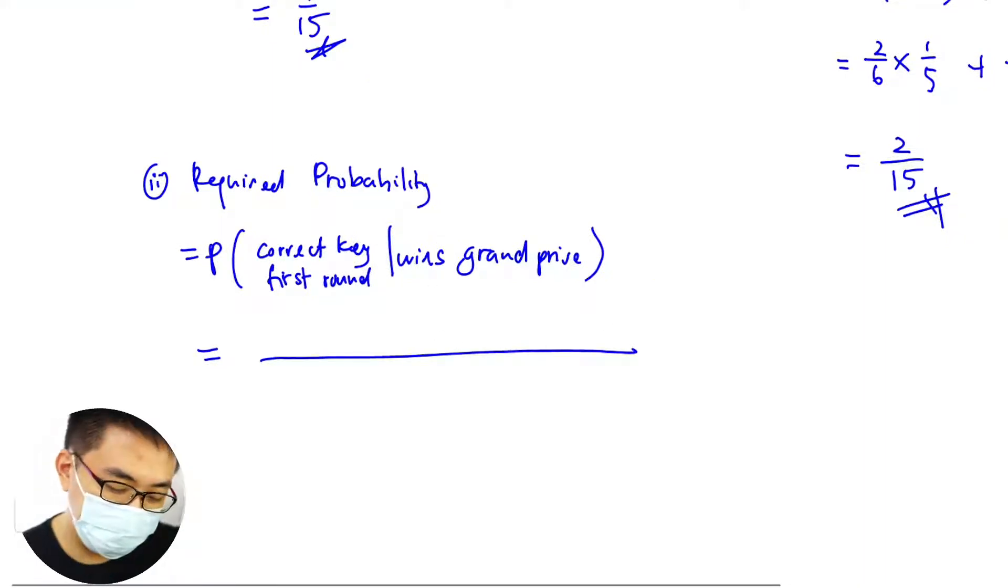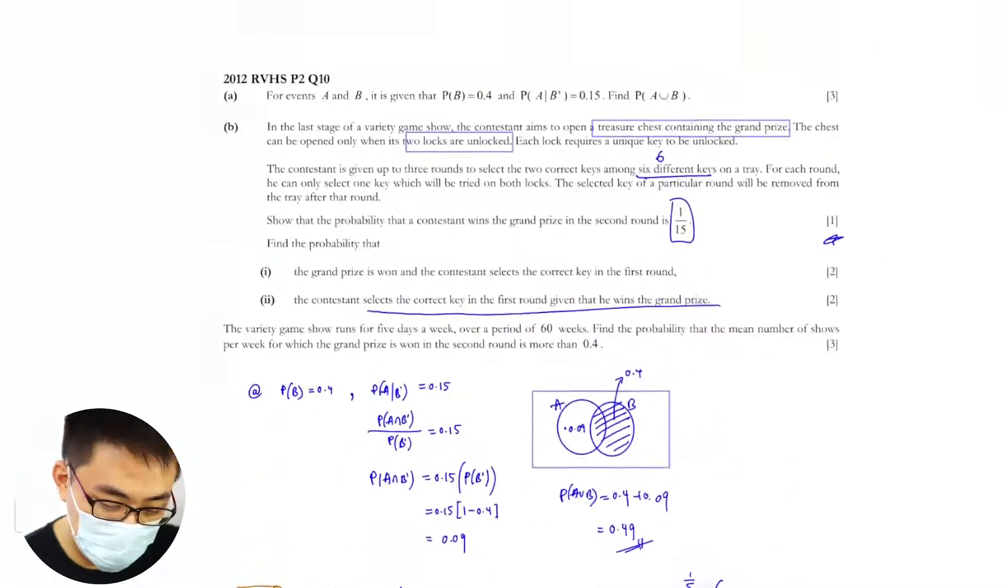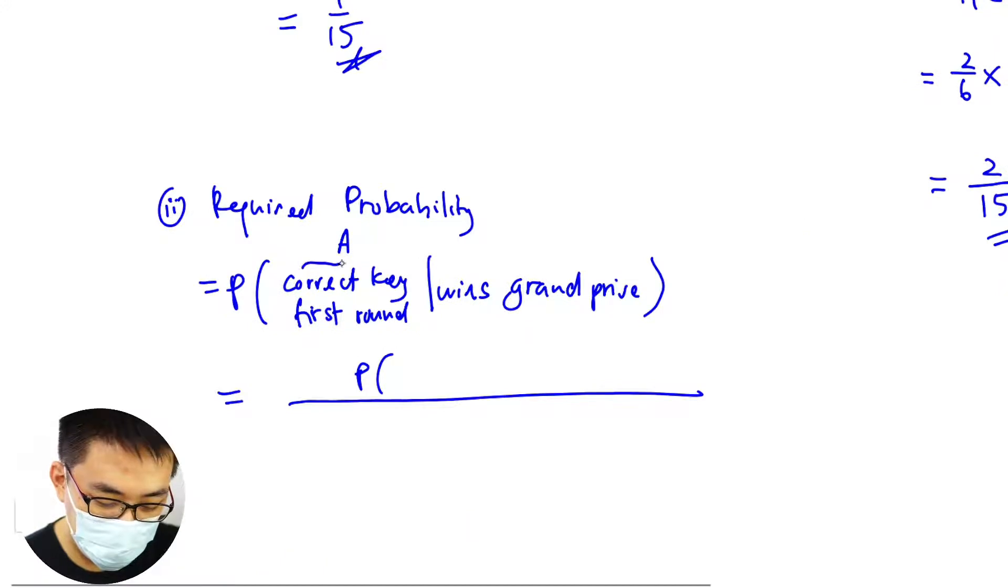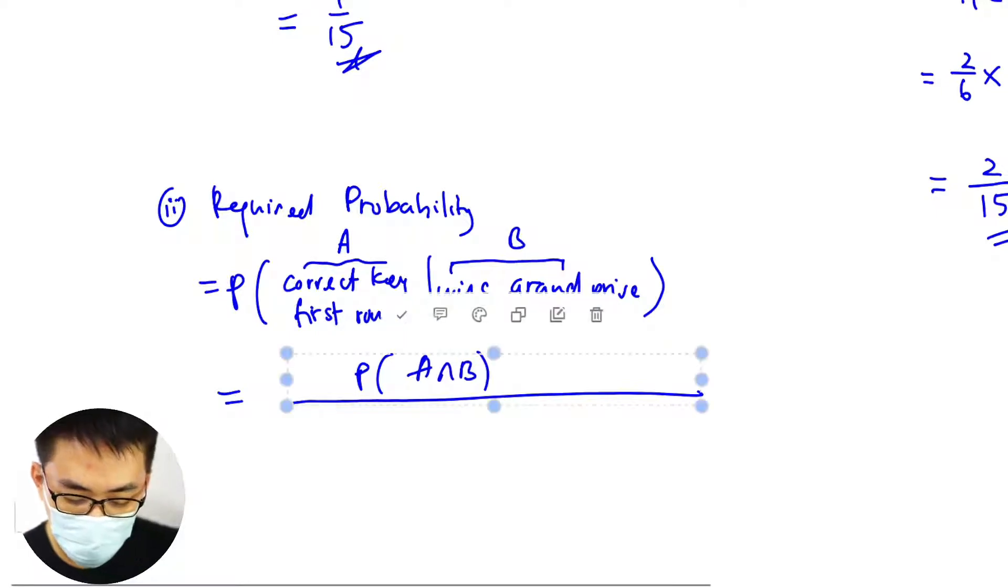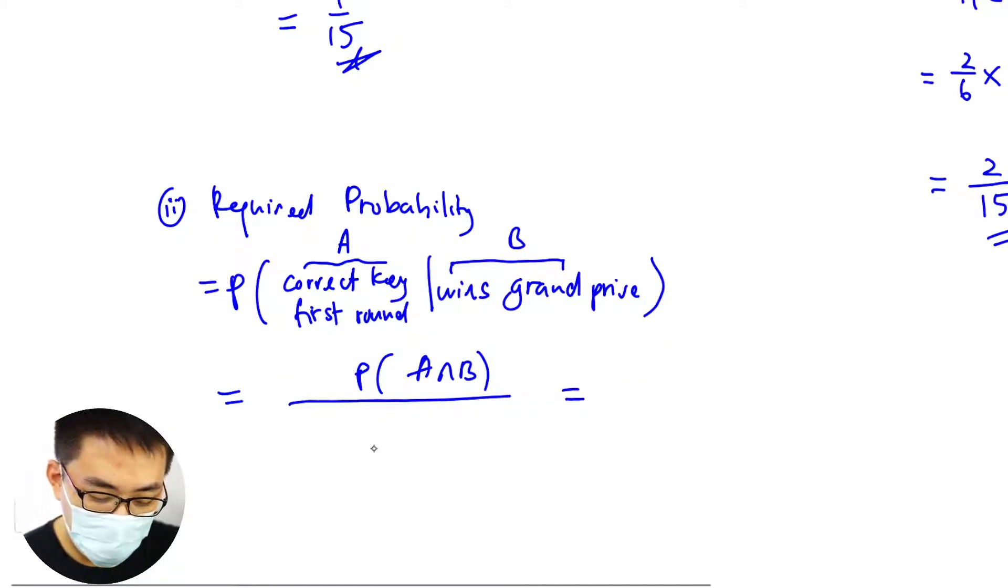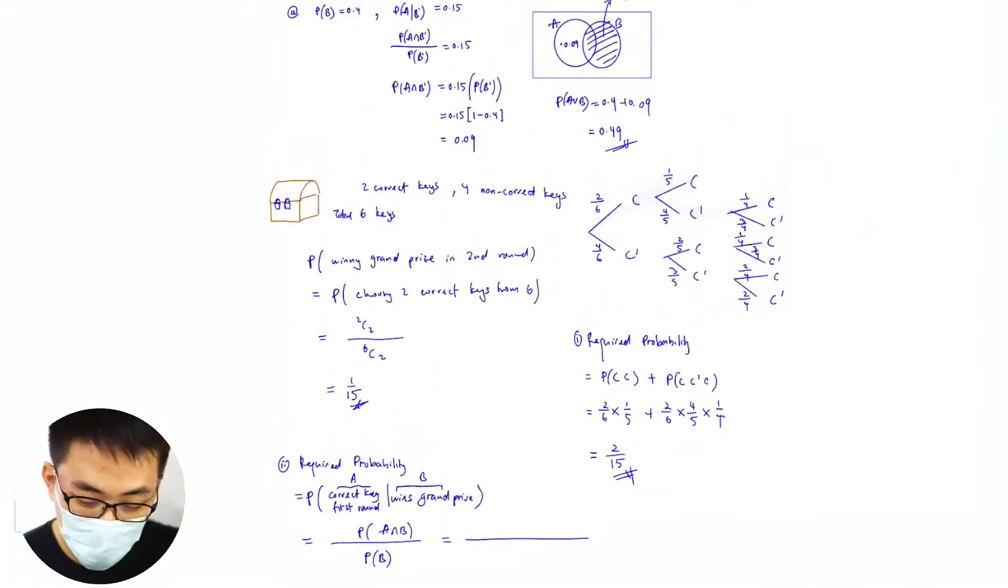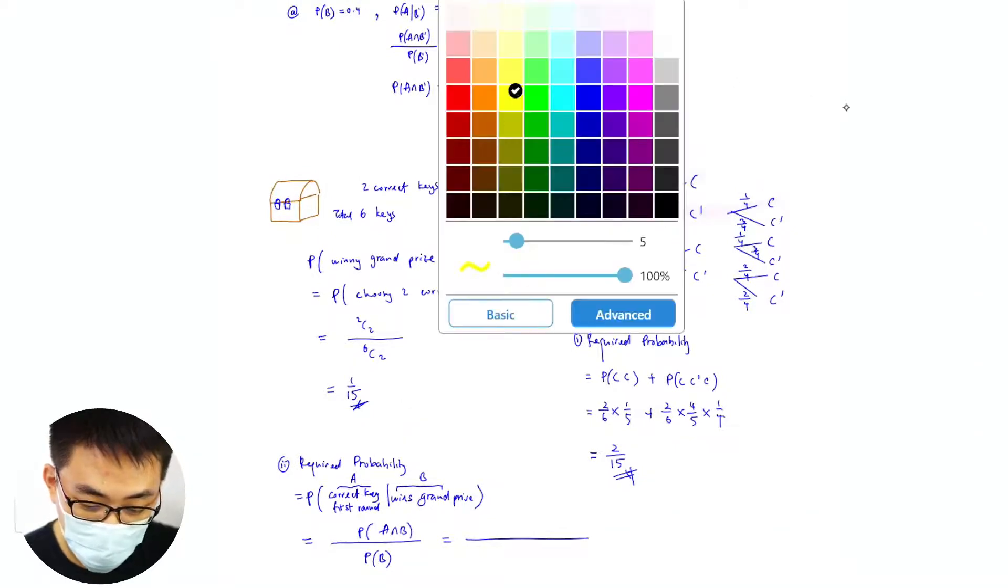All right, classic. This is event A and event B. So A intersect B, if you select key the first round and intersect you win the grand prize. This is the grand prize will mean that we just need to include this extra one below, which is this P(C' ∩ C), C prime C C.